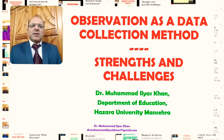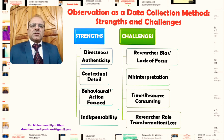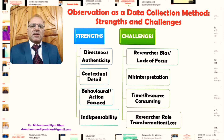So what are the main strengths because of which we make use of observation as a data collection method? It is very important that we also need to have an understanding of the possible challenges or weaknesses of this method. So first, the strengths. The first one is the directness of this method in terms of data collection — observation gives an opportunity to researchers to directly go into the field and collect data through direct observation.